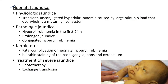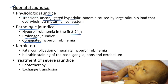Neonatal jaundice: physiological jaundice is due to transient unconjugated hyperbilirubinemia caused by a large bilirubin load that overwhelms a maturing liver system. Features of pathologic jaundice include hyperbilirubinemia in the first 24 hours, prolonged jaundice, and conjugated hyperbilirubinemia.